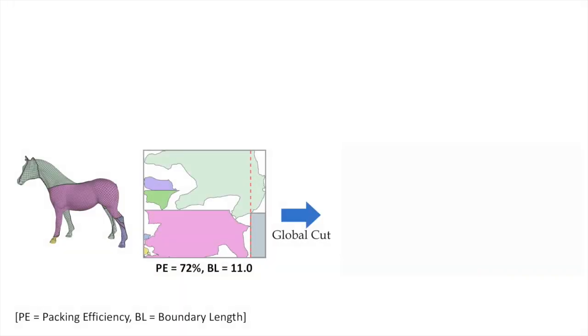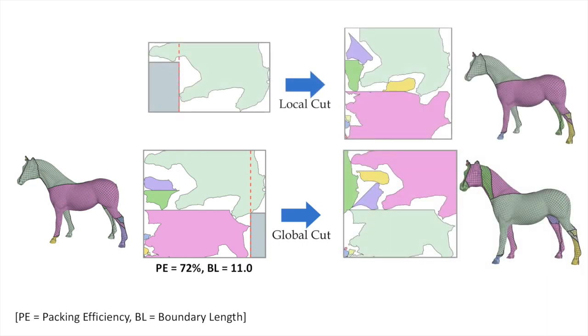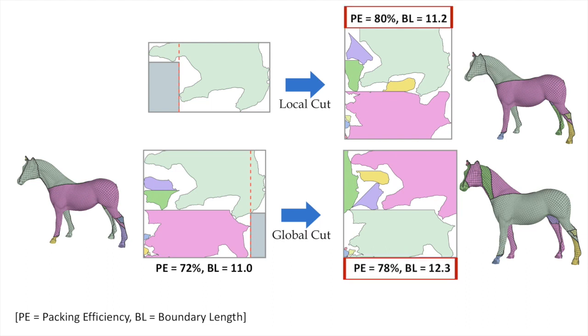We then perform the candidate cut with the highest score. In order to explore an even larger space of promising cuts, we detect void boxes not only globally inside the atlas, but also locally inside each chart. From these void boxes, we derive local cuts through the chart and evaluate the repacked solution.